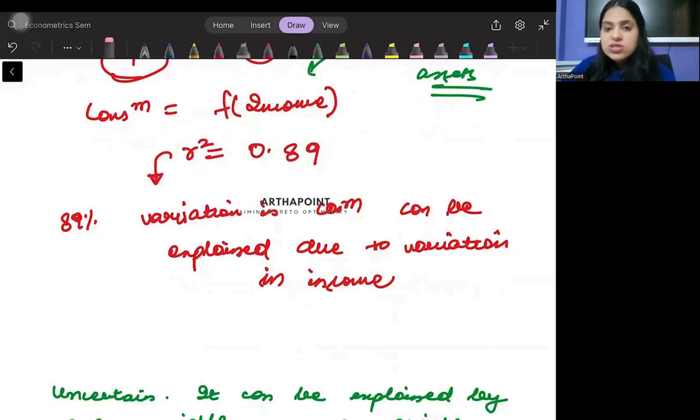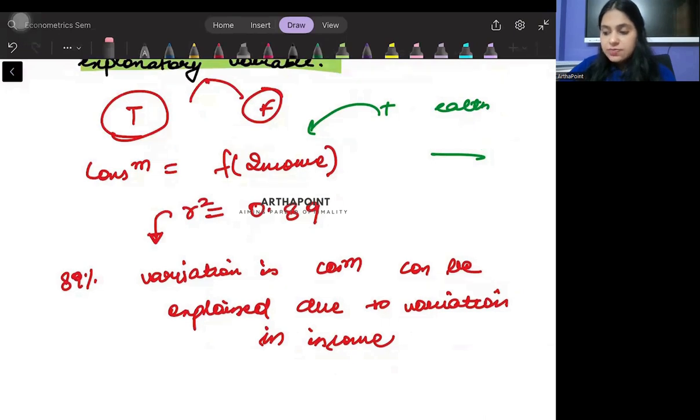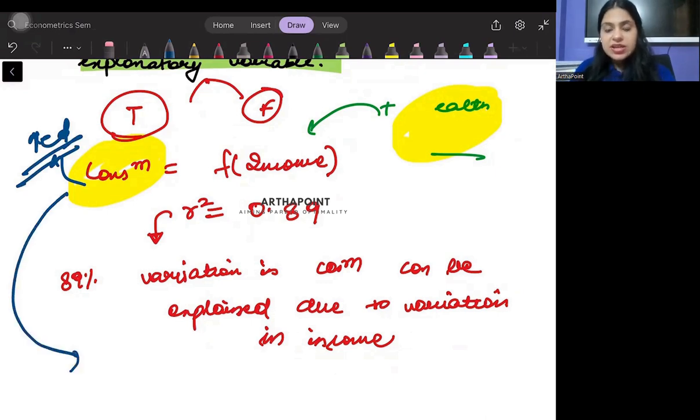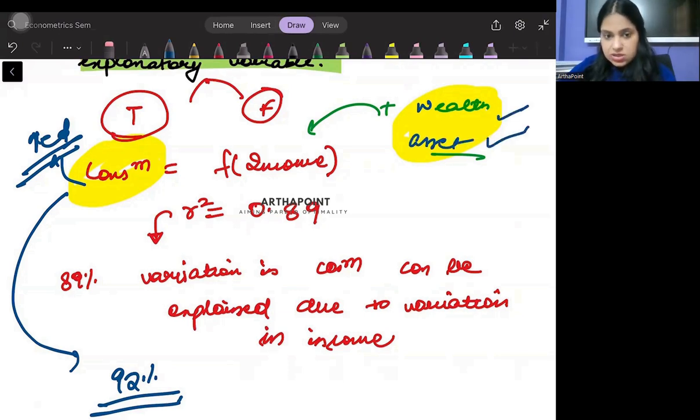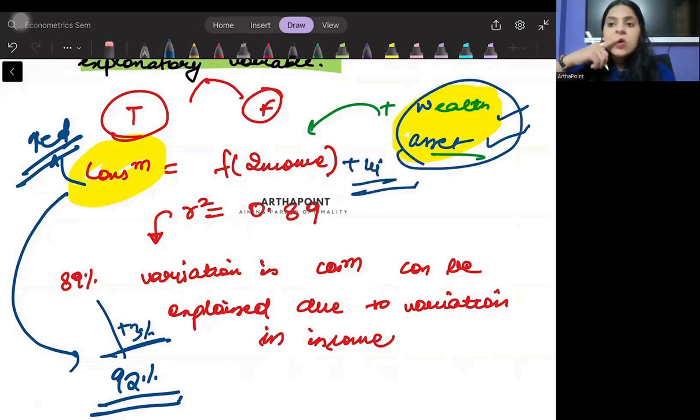Let's say that suppose adding the wealth or the asset variable, when I add wealth and asset variable, it does increase the amount of variation I can explain in consumption. Suppose the amount of variation explained in consumption increases to 92 percent. But the question is, is it worth making the model so complicated that I include two more variables just to increase three percent more variation, explained variation in consumption, or should I just assume these to be part of my error term?